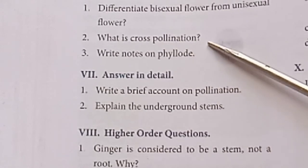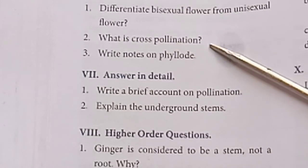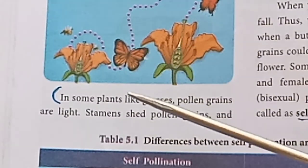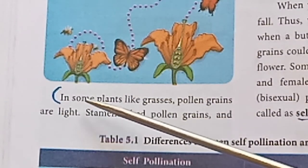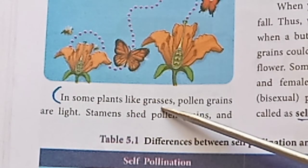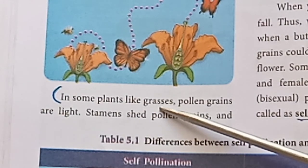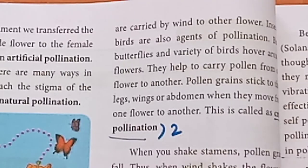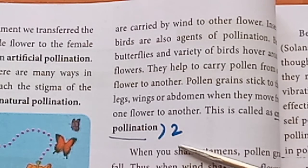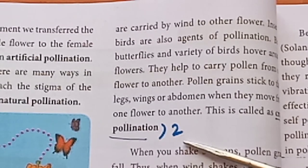What is cross-pollination? In some plants like grasses, pollen is transferred from the anther of one flower to the stigma of another flower. This is called cross-pollination.